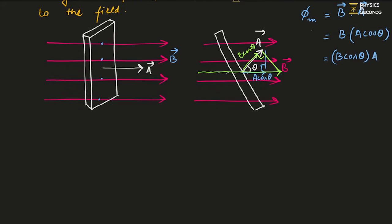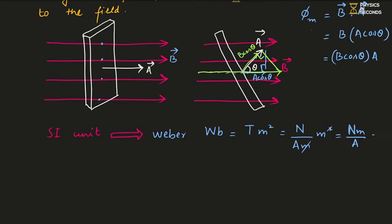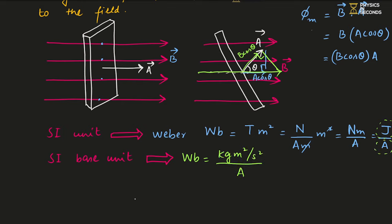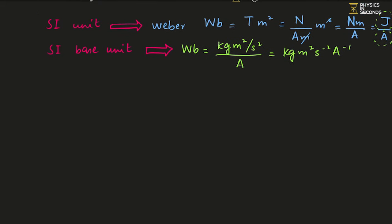The SI unit of Magnetic Flux is Weber (Wb). Weber = Tesla × m² = (N/A·m) × m² = N·m/A = Joule/Ampere. The SI base unit of Weber is kg·m²·s⁻²·A⁻¹. Magnetic flux is maximum when the vector area is parallel to the field lines (angle = 0°, surface perpendicular to B), and zero when the vector area is perpendicular to the field lines (angle = 90°, surface parallel to B).